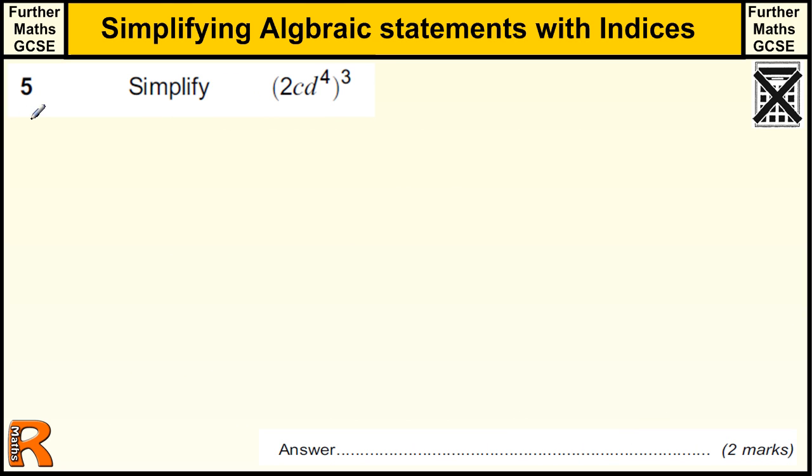Simplifying Algebraic Statements with Indices is the Further Maths GCSE question. So we've got 2cd to the power of 4 all cubed.